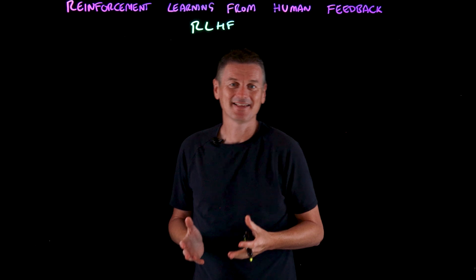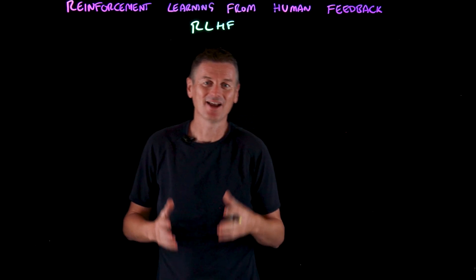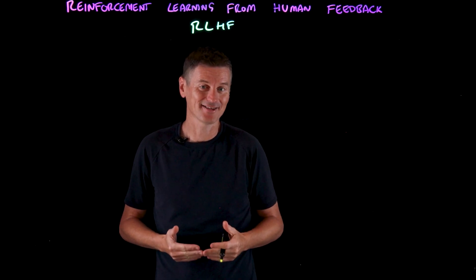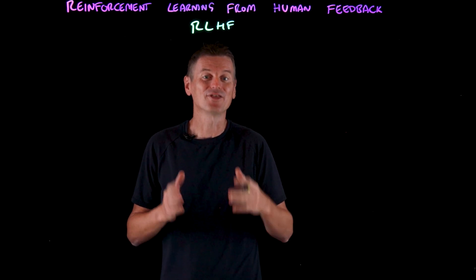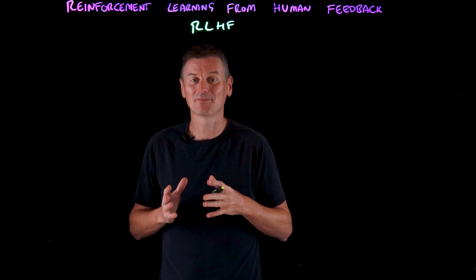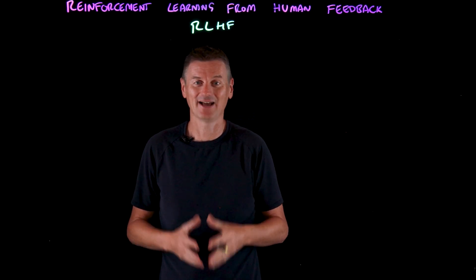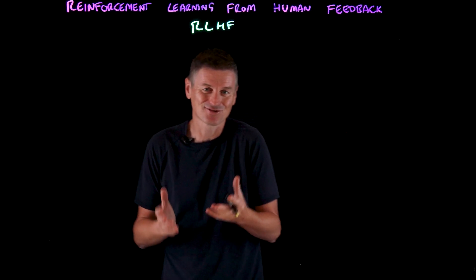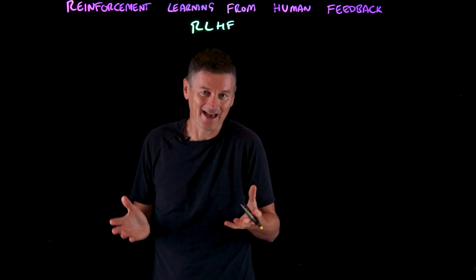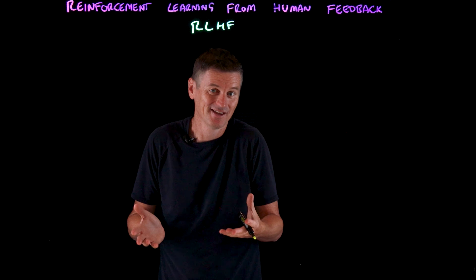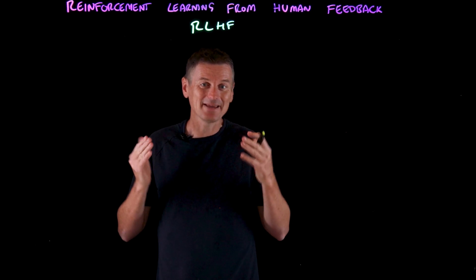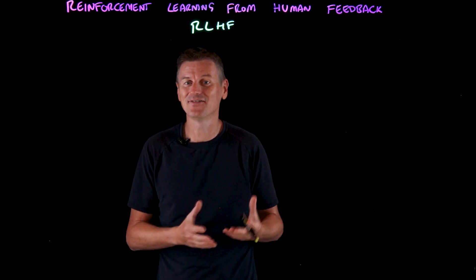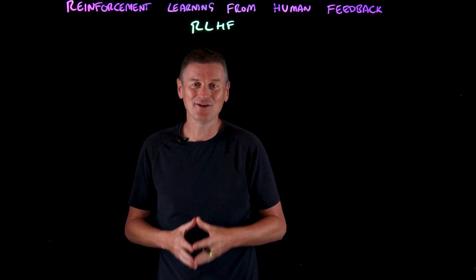RLHF is a technique used to enhance the performance and alignment of AI systems with human preferences and values. LLMs are trained and they learn all sorts of stuff, and we need to be careful how some of that stuff surfaces to the user.